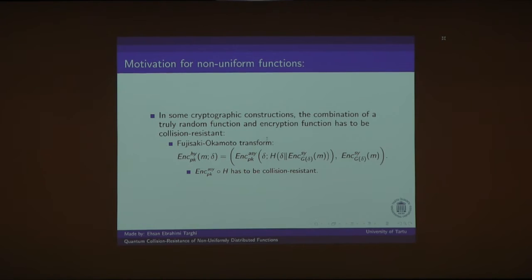This is the case for Fujisaki Okamoto transform. And their construction basically combines two weakly secure encryption schemes using two random oracles H and G to construct a CCA encryption scheme in the random oracle model. And security relies on the fact that outputting a collision for encryption composed with H has to be difficult.